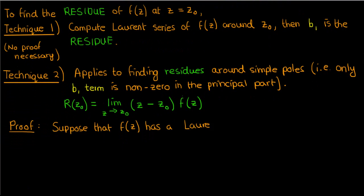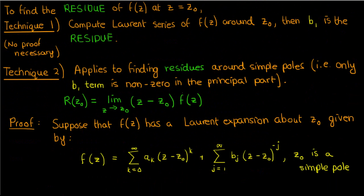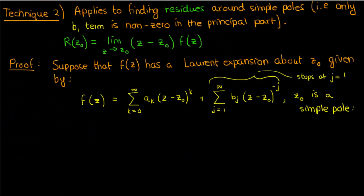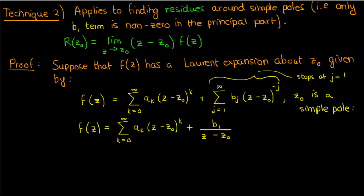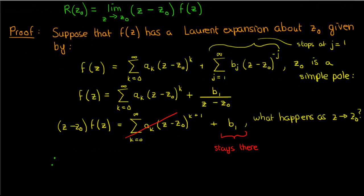For the proof, suppose f of z has a Laurent expansion about z0. Because z0 is a simple pole, the b series only goes up to j equals 1, so the Laurent expansion simplifies to the sum from k equals 0 to infinity of a_k times (z minus z0) to the k, plus b1 over (z minus z0). Multiplying both sides by (z minus z0), and taking the limit as z approaches z0, the summation term vanishes since it contains powers of (z minus z0) greater than or equal to 1, leaving only the constant b1. So the residue at a simple pole z0 is the limit as z approaches z0 of (z minus z0) times f of z.